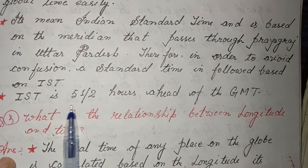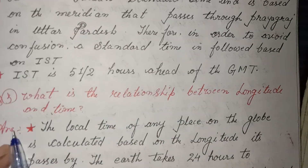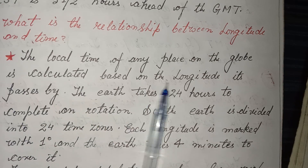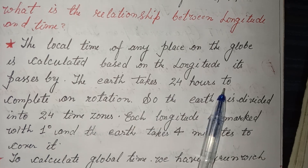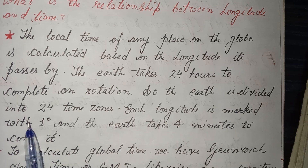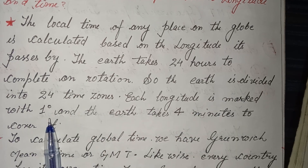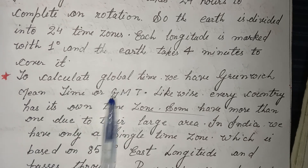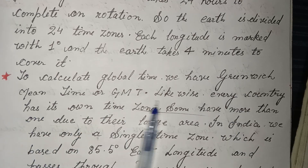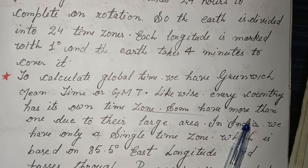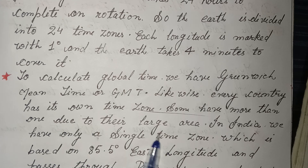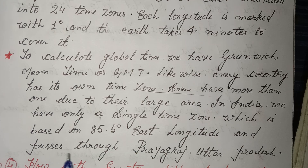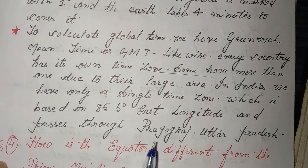IST is 5 and a half hours ahead of GMT. Third: what is the relationship between longitudes and time? Answer: the local time of any place on the globe is calculated based on the longitude it passes through. The earth takes 24 hours to complete one rotation, so the earth is divided into 24 time zones. Each longitude is marked with one degree and the earth takes four minutes to cover it. To calculate global time we use Greenwich Mean Time. Every country has its own time zone; some have more than one due to their large area. In India, we have only a single time zone based on 82.5 degrees East longitude, passing through Prayagraj, Uttar Pradesh.